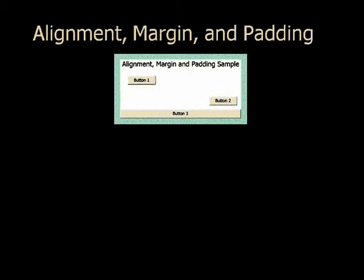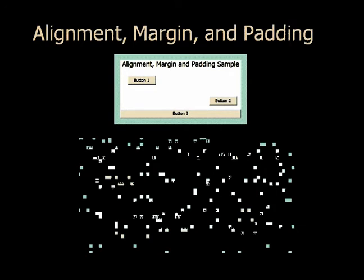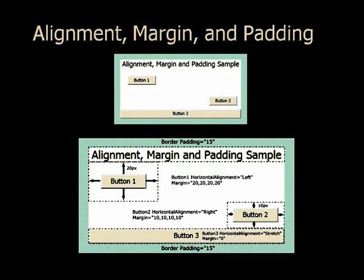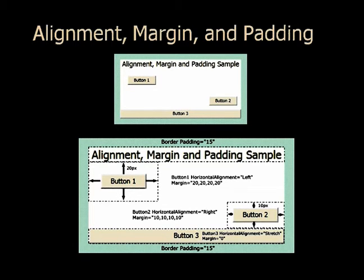Here's an example of alignment, margin, and padding, showing what the window looks like at runtime. The black box around everything is a border with its padding set to 15. Inside that is a panel — it could be a stack panel or a grid. Button 1 has its horizontal alignment set to left and its margin set to 20, so the button is anchored on the left with 20 pixels between it and the container on all sides. Button 2 is aligned right with a margin of 10. Button 3 has no margin so it sits right up against the panel, and its horizontal alignment is set to stretch so it widens to fill the entire width.